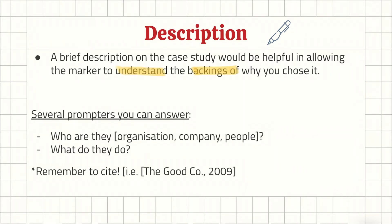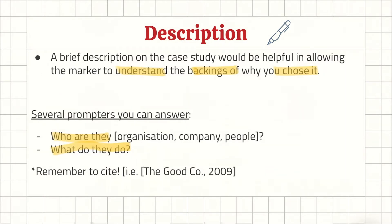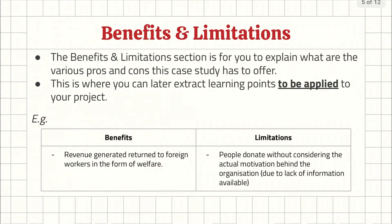The description is very simple — it's literally just a description of the case study, and it helps the marker understand the background of why your group chose this case study. This requires citations. Some prompts to answer: Who are they — an organization, a company, a group of people, the government? What do they do? They may not be related to your group's project, but it's important for the marker to know. Remember to cite, for example: 'The Good Company, 2009.' This ensures the description is accurately referenced.